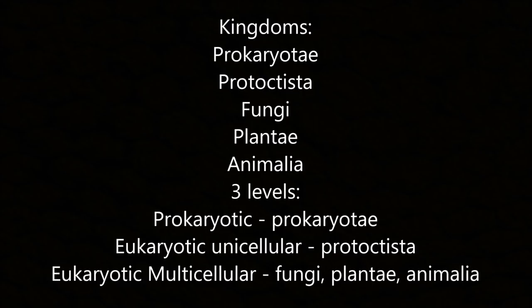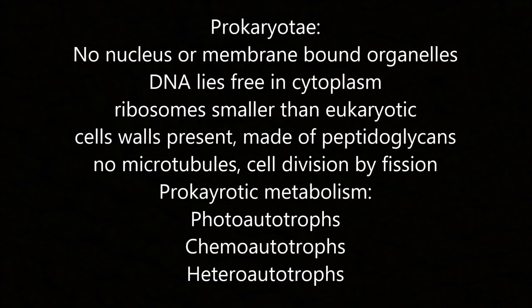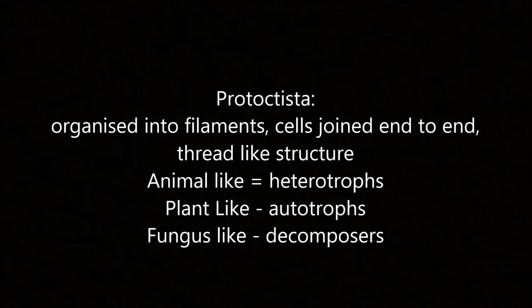The five kingdoms are Prokaryotae, Protoctista, Fungi, Plantae and Animalia. The three levels are prokaryotic (Prokaryotae), eukaryotic unicellular (Protoctista), and eukaryotic multicellular (Fungi, Plantae and Animalia). Prokaryotes have no nucleus or membrane-bound organelles; DNA lies free in the cytoplasm; ribosomes are smaller than eukaryotic; cell walls are made of peptidoglycans; no microtubules; cell division by binary fission. Prokaryotic metabolism types include photoautotrophs, chemoautotrophs and heterotrophs.